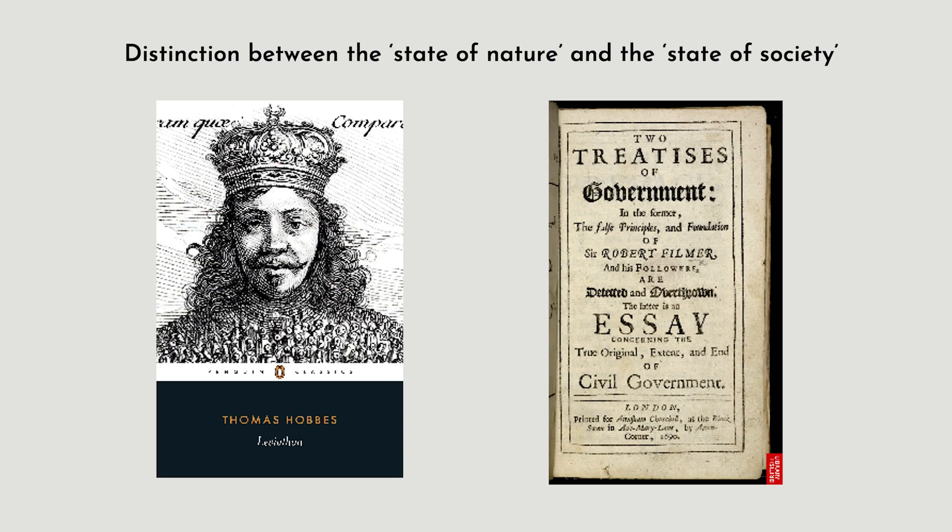This lecture is about European social theory in the 17th and 18th century and its representation of the liberal individual and his rights. These are rights associated with the ownership and use of private property. I will begin with the English philosophers Thomas Hobbes and John Locke and their distinction between the state of nature and the state of society.